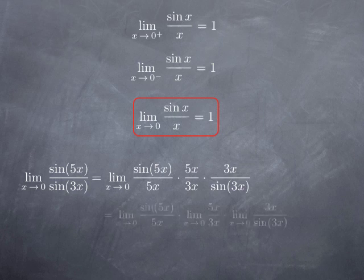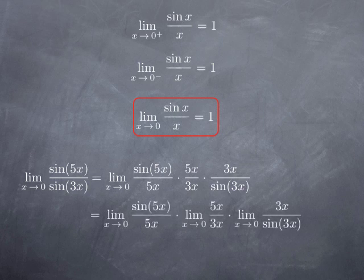We obtain the product of the limits: the first term has limit 1, the second is the constant 5/3, and the third goes to 1 over 1, which is 1. Therefore, the product equals 5/3, which is the limit of sin(5x) divided by sin(3x) as x approaches 0.